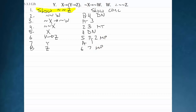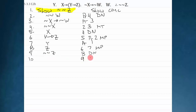After doing a bunch of modus ponens and modus tollens, I realize I'm trying to show double negation Z. I have Z, so I'm really close. I just double negate line eight, and on line ten I say that on line nine, that's exactly what I wanted — a direct derivation. I can now box and cross off the show. That is a completed derivation.